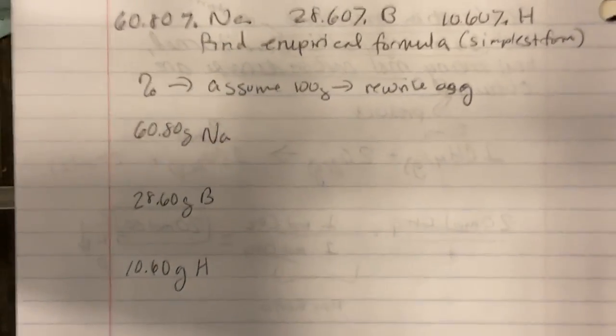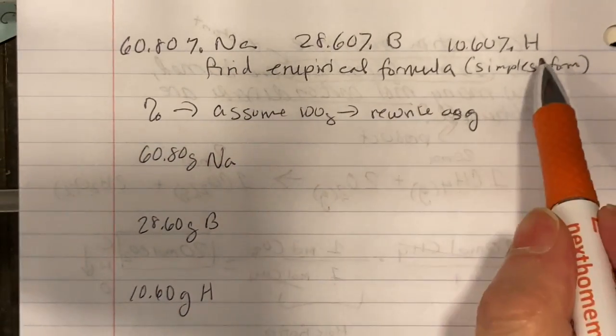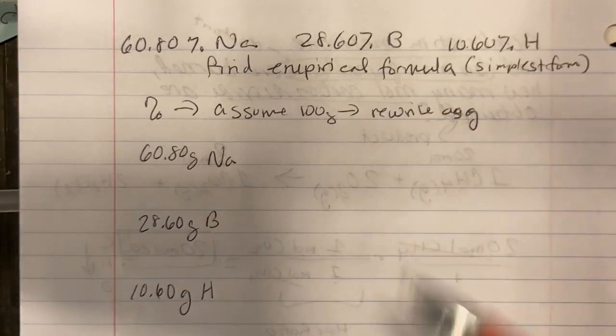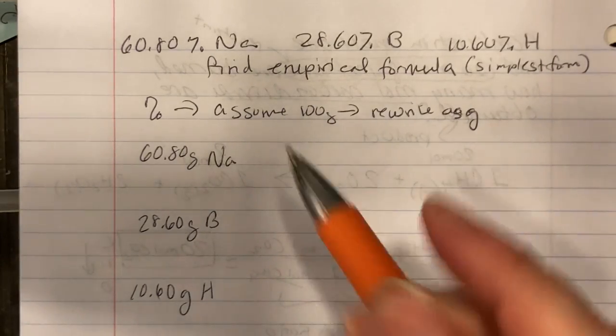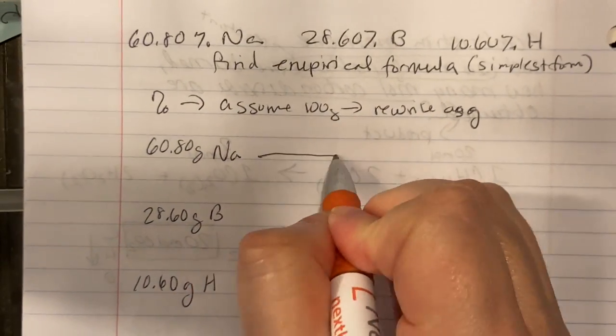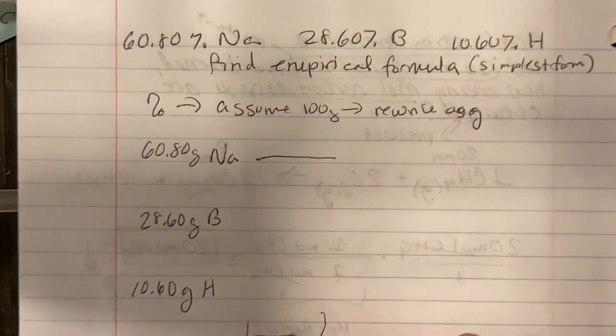Now, if you were doing this and they started you off with grams, then you don't have to find the percent composition. You just have to go right from these numbers. Next step, convert from grams to moles. Same way we've been doing that, molar mass.